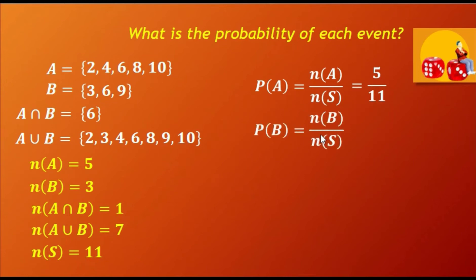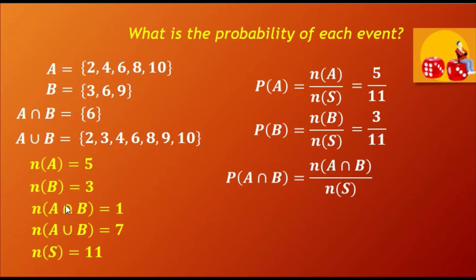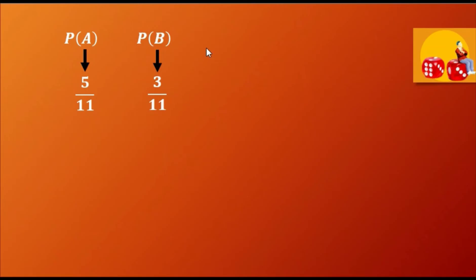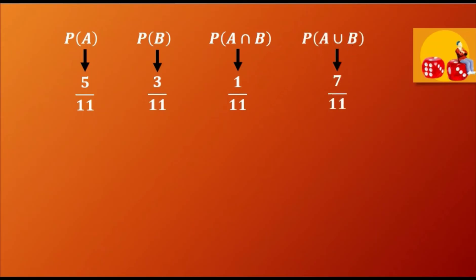To get the probability of B, it will be the ratio of the cardinality of B, which is 3, and the cardinality of S, which is 11. So we have 3 over 11. The probability of A intersection B is the cardinality of A intersection B over the cardinality of S, therefore we have 1 over 11. Finally, to get the probability of A union B, we get the ratio of the cardinality of A union B and the cardinality of S, and that is 7 over 11.